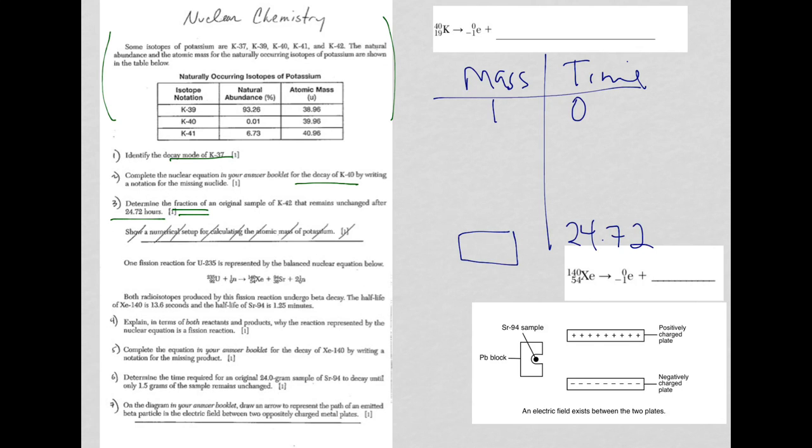So what do I do? With time, I'm adding time. 12.36 hours go by, and I have half of my original sample. Another 12.36 hours go by for a total of 24.72, and I'm going to have half of the half, which is a quarter. And there's my answer.